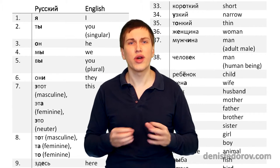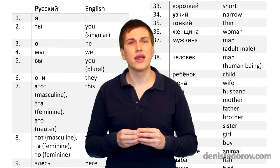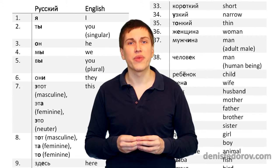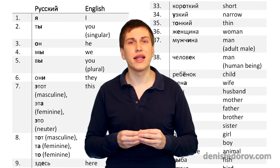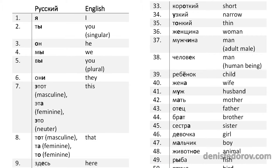You can download this adapted Swadesh list – the link is in the description to this video. It is a ready-to-print handy PDF. So use it. Now let's look at this list. You can see this PDF on the screen. In the first column there are Russian words and in the second their translation into English. If you look at the Russian words more closely, you will see that they have bold letters inside.